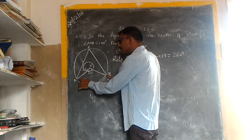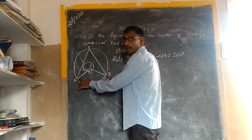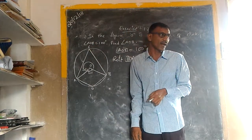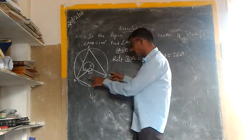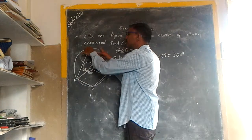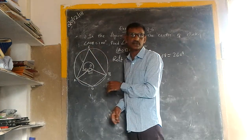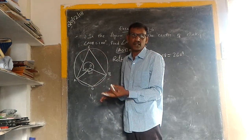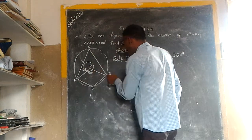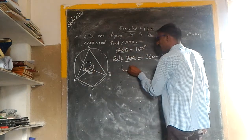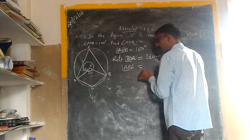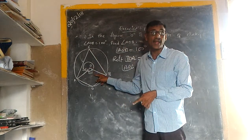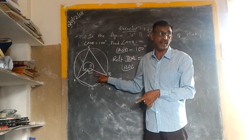Now, looking at this angle — the angle subtended at the center is double the angle subtended by the remaining arc. So angle AOB is related to the angle at the circumference.